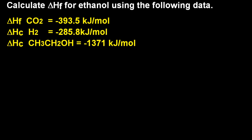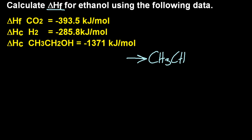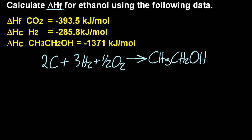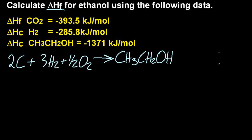The second and last question: calculate the heat of formation for ethanol using the following data. I'm not going to use state symbols because there's no room on this board. Let's start by writing out the equation for the heat of formation of ethanol — making one mole of ethanol from the elements in their standard state. Just one mole of ethanol. That's Delta HF for ethanol, which we don't know.